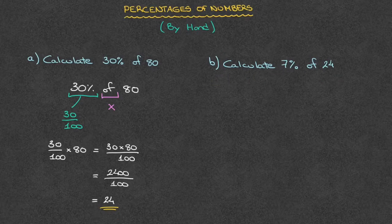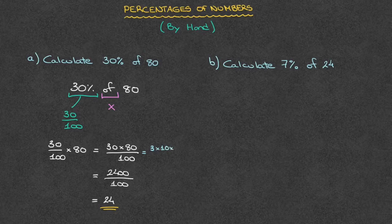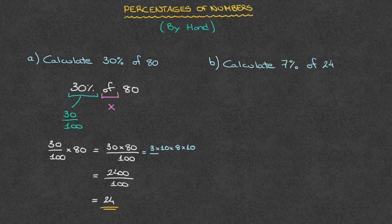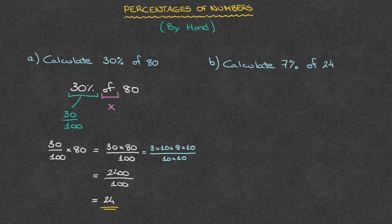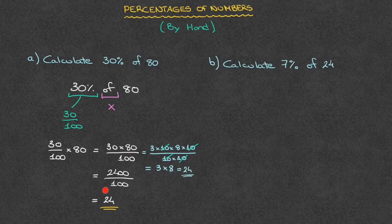Before working through the second example, let me quickly go back to the fraction 30 times 80 over 100. If you are comfortable with simplifying fractions, you'll see this can be simplified quite a bit. We could state that equals 3 times 10 times 8 times 10, all over 10 times 10, since 10 times 10 is 100. We can then cross out the 10 times 10 on both numerator and denominator, leaving just 3 times 8, which equals 24 — confirming our answer.